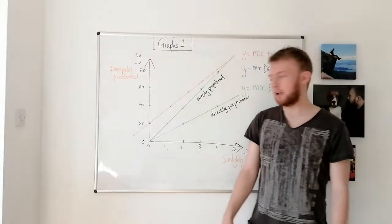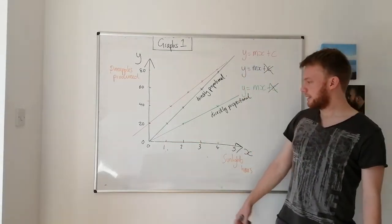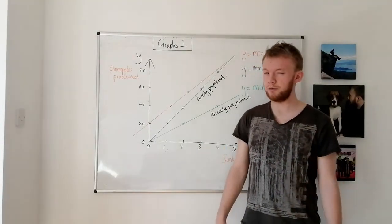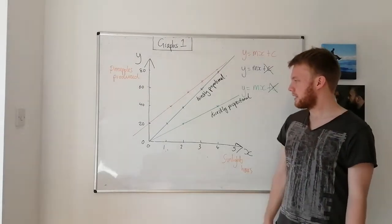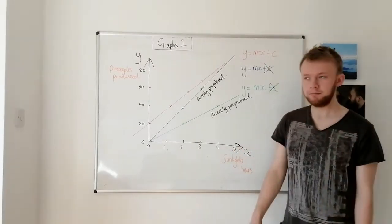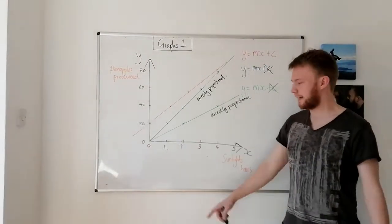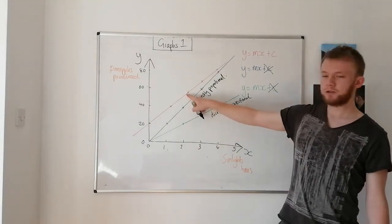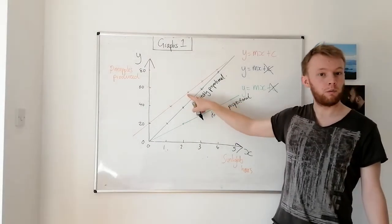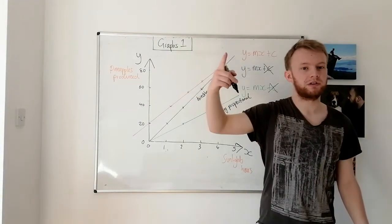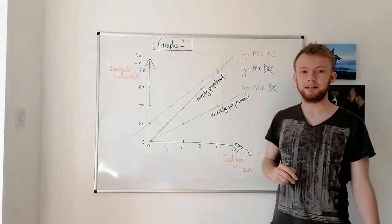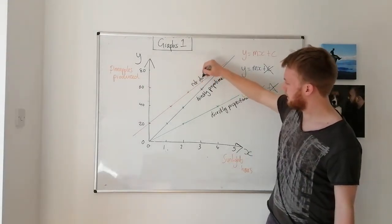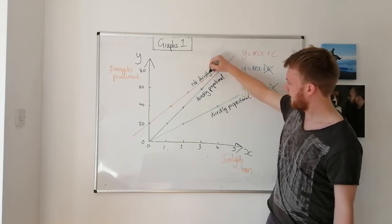Okay. Let's look at the red line now. So initially with no sunlight hours, 20 pineapples were produced. Seems like this might be some questionable data. After one sunlight hour, 40 pineapples were produced. Okay. Pineapple land here. After two sunlight hours, about 58 or so pineapples were produced. So that's not double 40. This is not a directly proportional relationship. So this is not directly proportional.